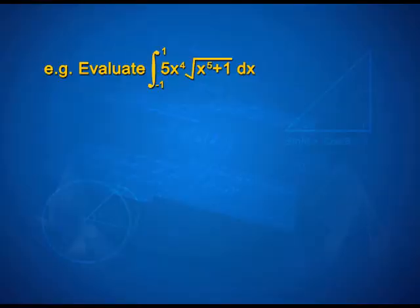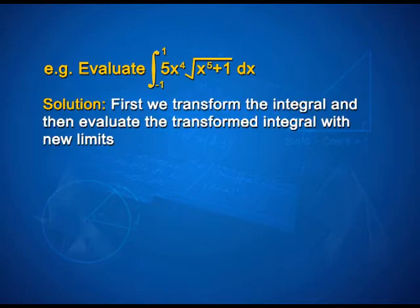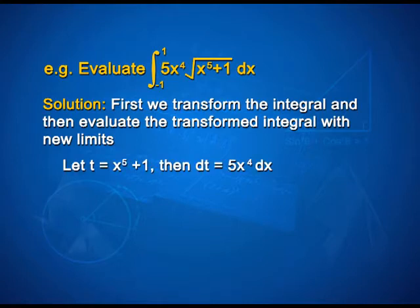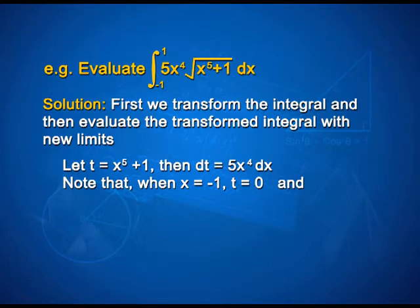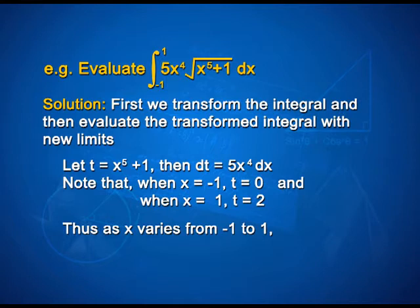Evaluate the integral from −1 to 1 of 5x⁴ · √(x⁵ + 1) dx. First we transform the integral and then evaluate with new limits. Let t = x⁵ + 1; then dt = 5x⁴ dx. When x = −1, t = 0, and when x = 1, t = 2. Thus as x varies from −1 to 1, t varies from 0 to 2.